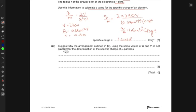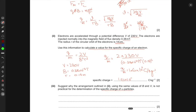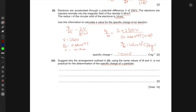The next part says suggest why the arrangement outlined in part 2 using the same values of B and V is not practical for the determination of specific charge of alpha particles. So this is the arrangement in part 2. Electrons are accelerated through a potential difference V of 230 volts. In this arrangement, they're injected normally to the magnetic flux density, and electrons are the particles that are injected.